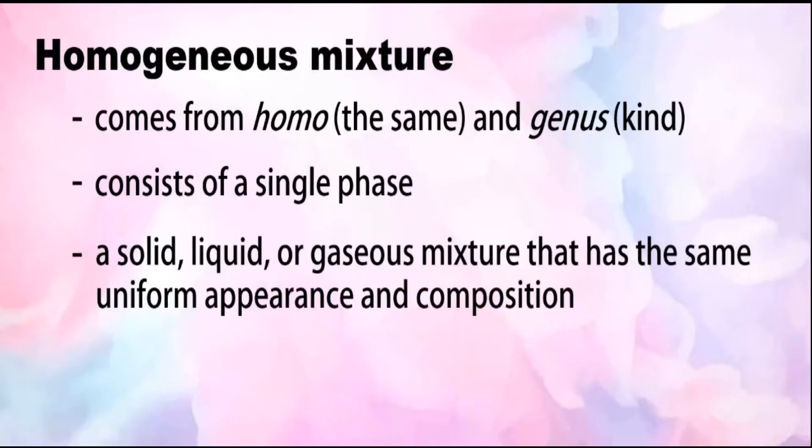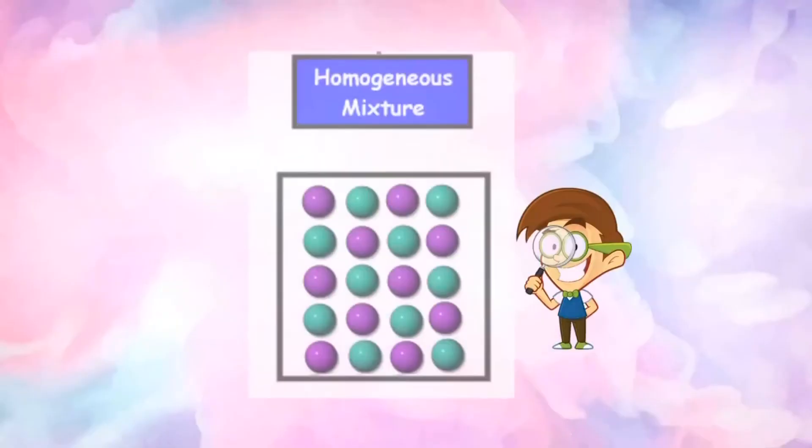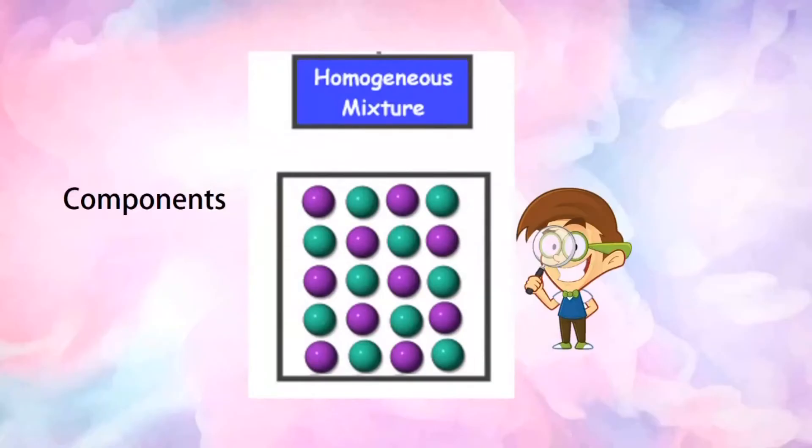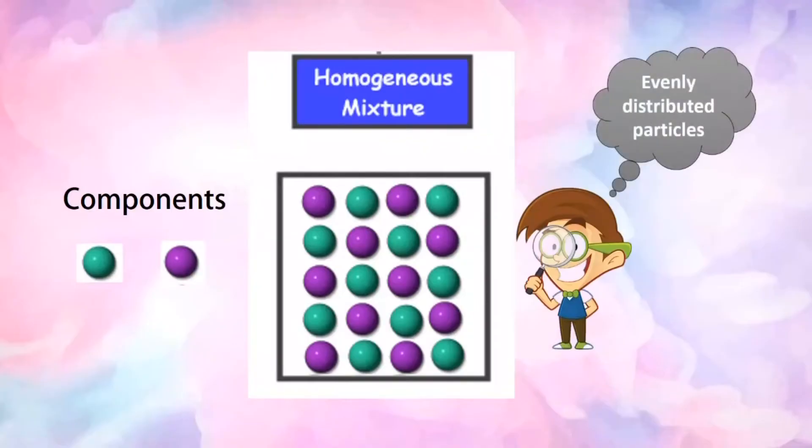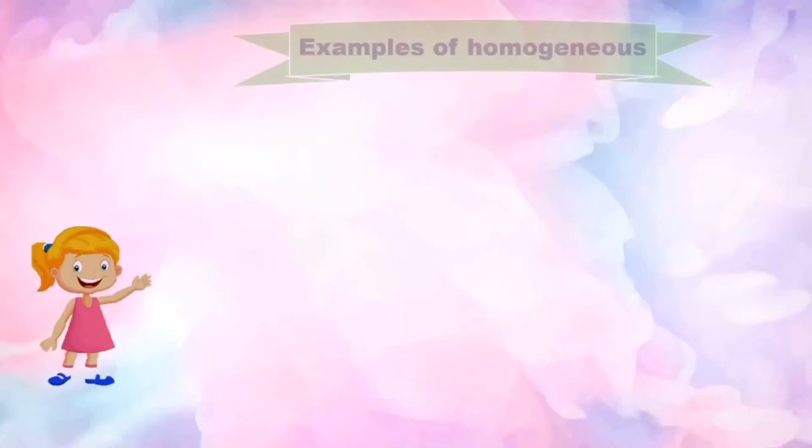A homogeneous mixture appears uniform to the eye. Let us look closely at the particles of a homogeneous mixture. Its components, represented by green circles and violet circles, are evenly distributed throughout the mixture. Here are examples of homogeneous mixtures.